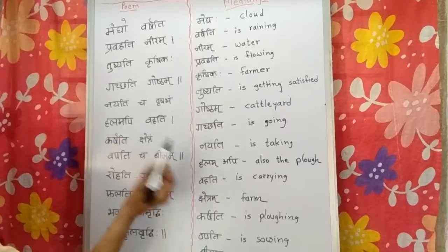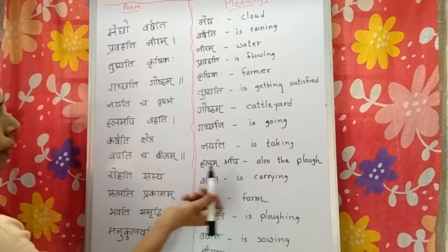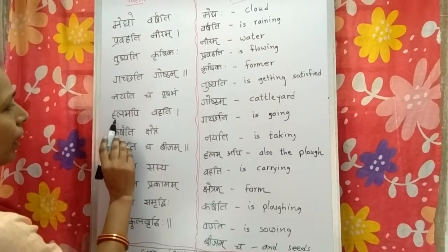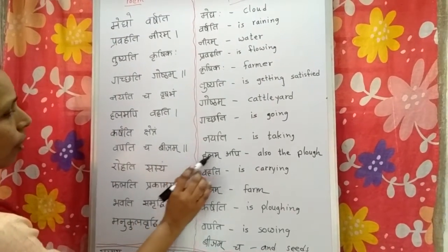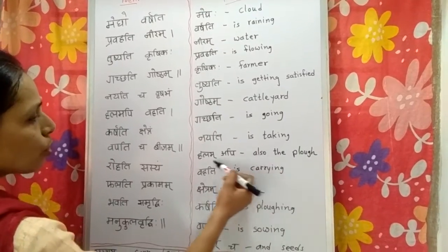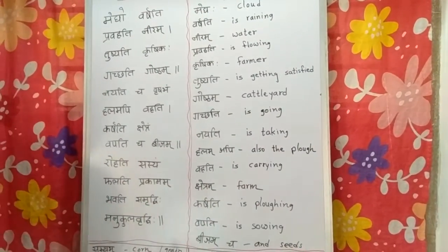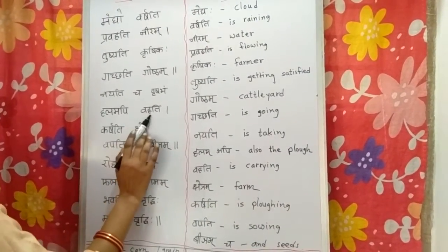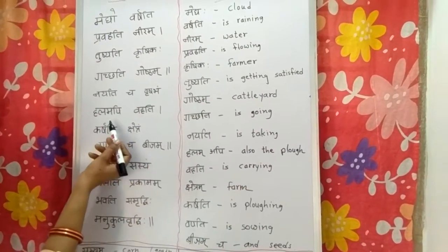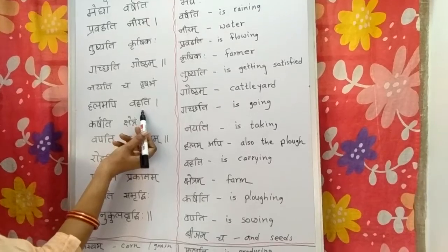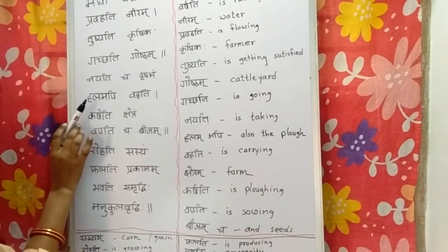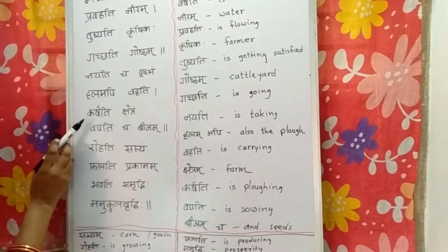Halam Api Vahati — Halam Api is made of two words. Api means also and Halam means the plough, so Halam Api means also the plough. Vahati means he is carrying. So he is carrying the plough also — he is taking the bullocks and he is also carrying the plough.